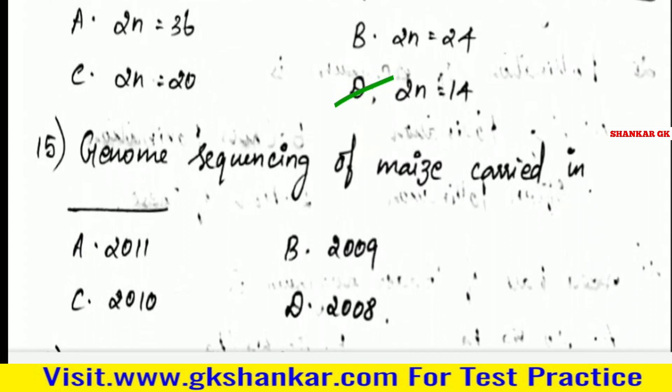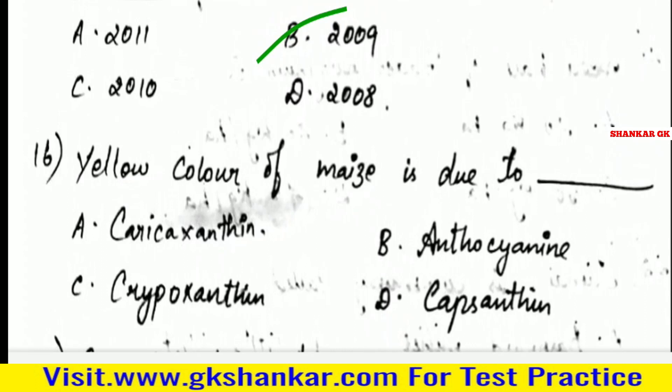Fifteenth question: Genome sequencing of maize was carried out in — A. 2011, B. 2009, C. 2010, D. 2008. Answer: B. 2009.